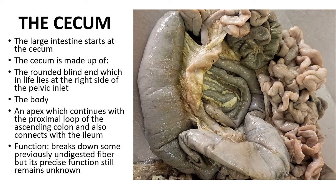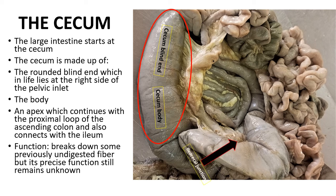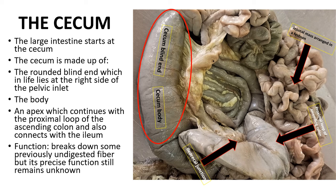On the diagram on your right, we can recognize the cecum and a few other structures found within the abdominal cavity of the ruminant. We can see the cecum with its blind end and body. We can also see the ileocecal junction — the point at which the ileum connects to the cecum — the proximal loop of the ascending colon, the jejunum mass arranged in a festoon, and the ileocecal fold which connects the ileum and the cecum.